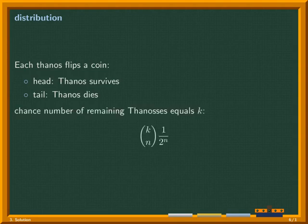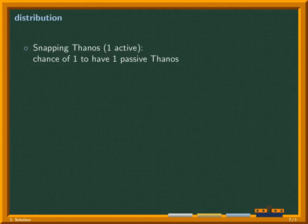The distribution of the number of heads, and by consequence, the number of remaining Thanoses, can be described by the binomial distribution, with p being one half. The Thanos that is snapping always survives, so he has a 100% chance to become a passive Thanos.